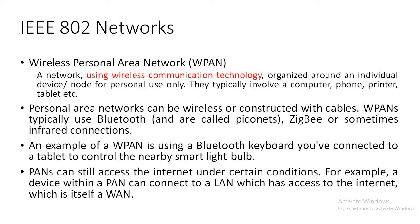Now let's study about wireless personal area networks. A wireless personal area network range is around an individual device or person. It is a network using wireless communication technology organized around individual devices for personal use only. They typically involve a computer, phone, printer, or tablet.